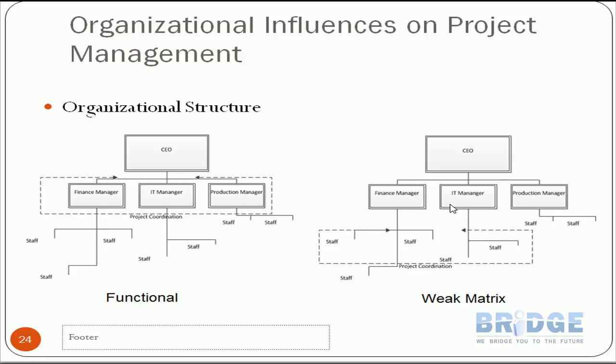It's more suitable than the functional structure, but we call it the 'weak' matrix because the coordinator is not empowered enough. The staff now reports to two people: their functional manager and the project coordinator or expediter. There is a distinction: a project coordinator has some authority to make decisions, while a project expediter has no authority at all — only following up on tasks.